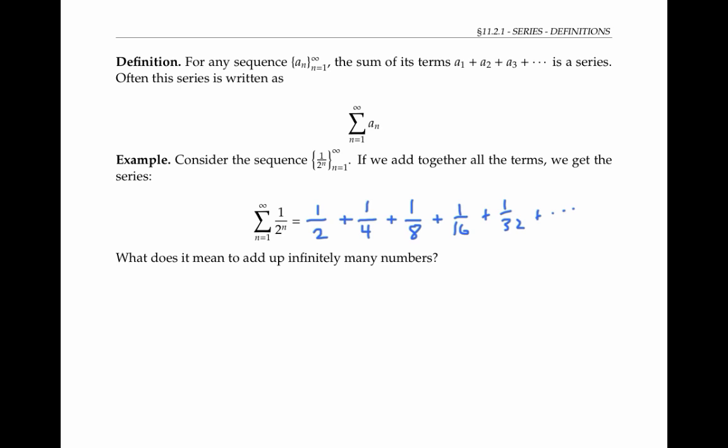But what does it really mean to add up infinitely many numbers? How can we figure out what this infinite sum equals? Well, to start out, we could add up finitely many at a time. Let me write down the first half dozen or so terms — that is, the a sub n's — and keep adding more and more of them together, one more at a time.